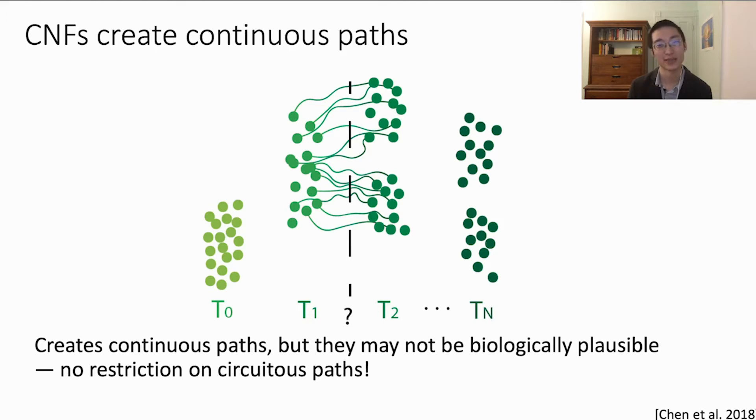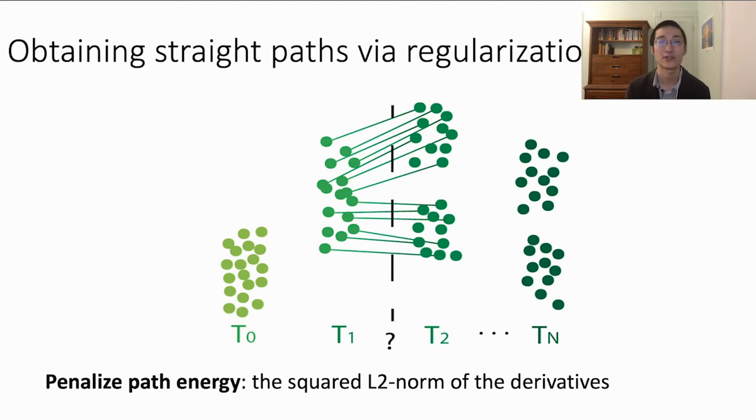Continuous normalizing flows can be used to transport populations along time, but may produce implausible or circuitous paths. The only thing they do is optimize the second time point, so they make sure the endpoint of the path matches the end and the beginning time point matches the beginning. There is no constraint on the middle or which pairings of cells are made. Next, we show how to adapt the continuous normalizing flows to be used through regularization of paths. Penalizing the squared L2 norm of the derivatives can be thought of penalizing the path length. This tends to straighten paths and has a nice interpretation in terms of optimal transport, which we get into next.